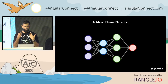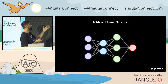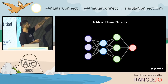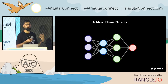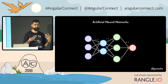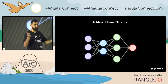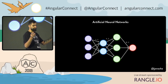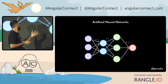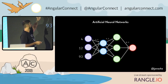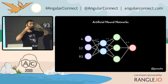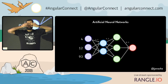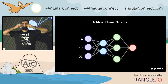You basically randomise all of these edges with different weights — that's all you're doing. Then you pump something into the input layer. Maybe you're pumping in the positions of the different parts of the face.